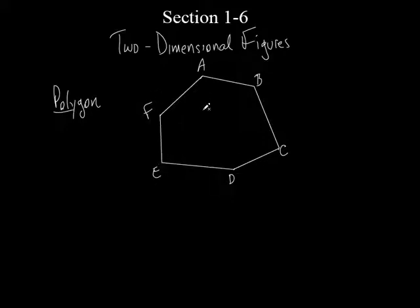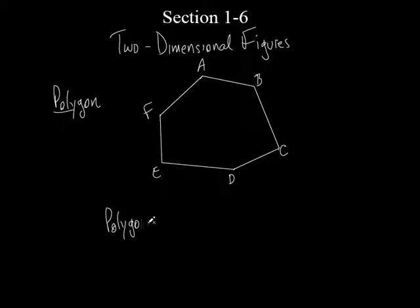You know how we had a fancy symbol for a line — you put the little line over top with arrows. We had a symbol for line segment — just the line without arrows. All year long we're going to learn different ways to label different pictures. But there's really no fancy way to label a polygon. We just say polygon. We could start at any letter — let's just start at A.